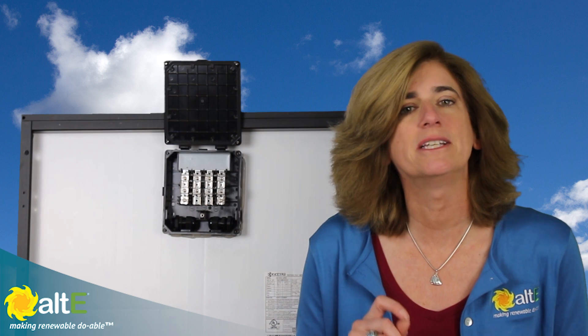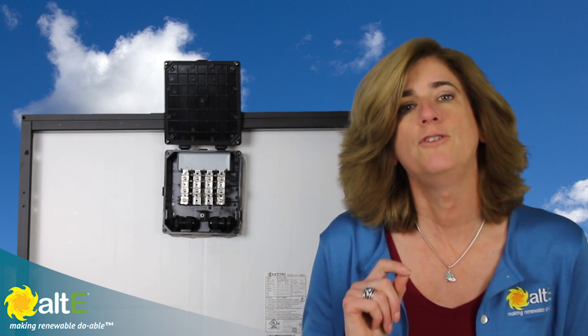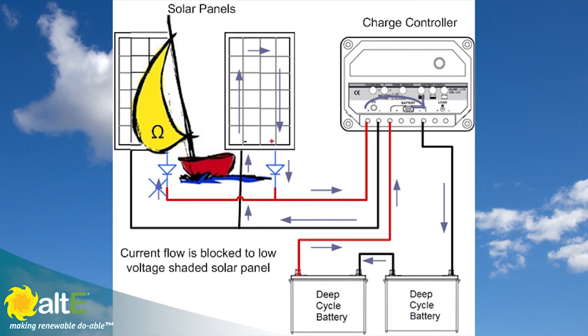However, there still may be some instances when a blocking diode may be helpful. If you have multiple parallel strings of solar panels that get shaded at different times, a blocking diode in series will help prevent the power from the sunny string being forced back up through the shaded string. This is common on sailboats with solar panels on both the port and starboard sides. Depending on your tack, one of the solar panels may be completely shaded and the other completely sunny. A blocking diode in series with each string will allow the sunny panel to output all its power and basically disconnect the shaded panel.